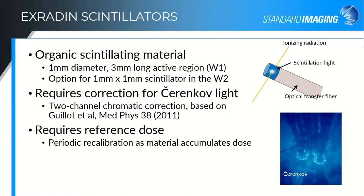The difficulty with scintillators is that you do produce Cherenkov light in that optical transfer fiber. This manifests as a stem effect — a different amount of additional optical signal based on the amount of stem, the amount of that transfer fiber, that's in the field. We use a two-channel chromatic correction method to remove the Cherenkov from the measurement channel, based on a publication by Matthew Gouyot et al. from Medical Physics a little over ten years ago.